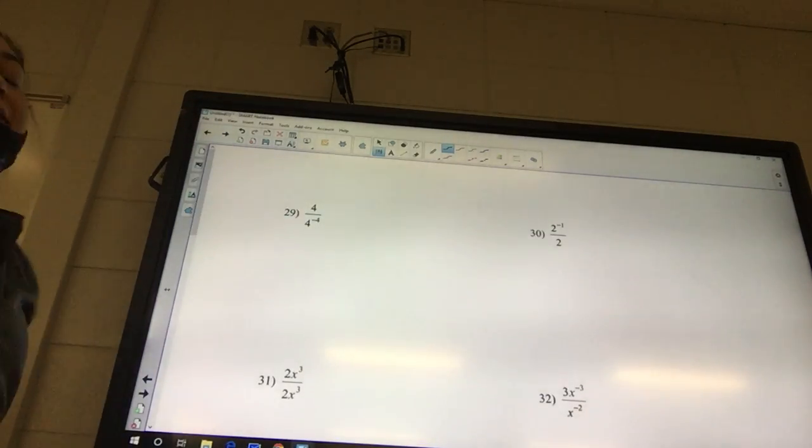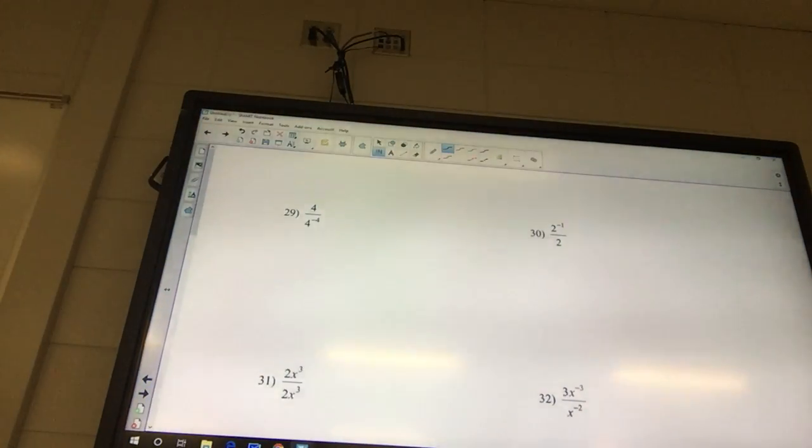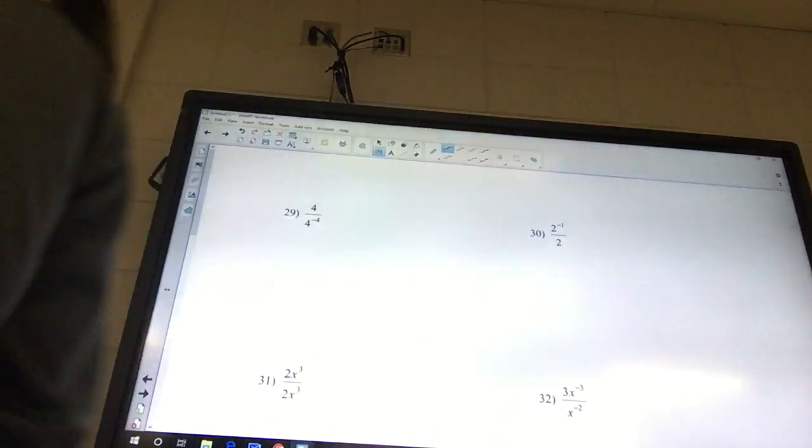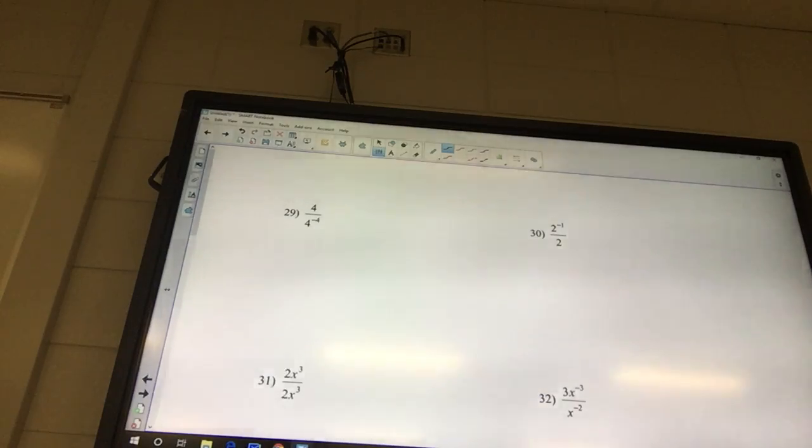The very last page, and if you guys have not figured it out already, the very first page, these are all just simplifying. The second page are all multiplication, where you add the exponents. The third page, which is the one we just finished, is the power rule where you multiply the exponents. The last whole page is the division rule, where you subtract the exponents.